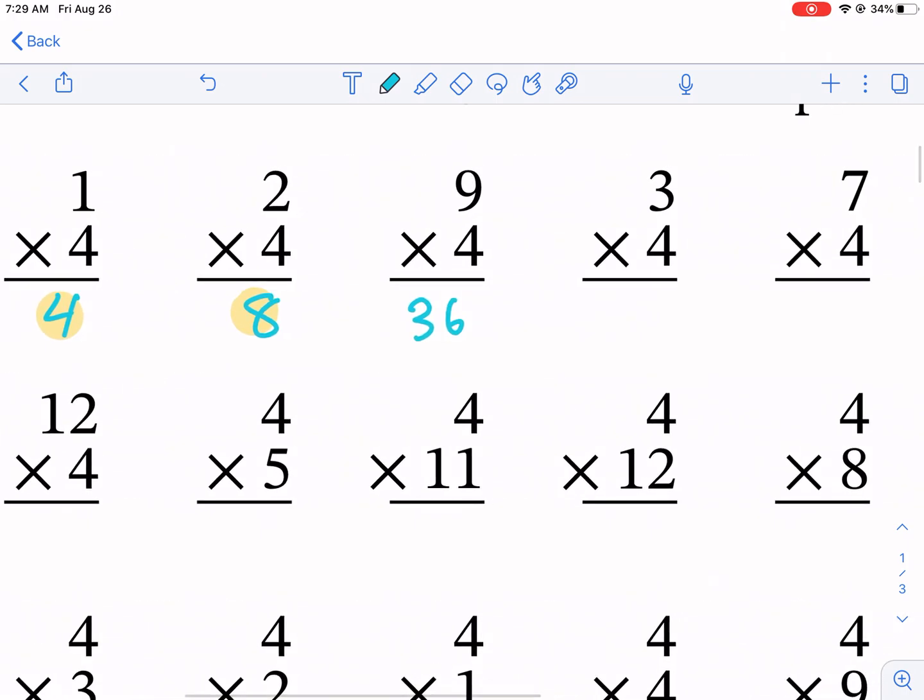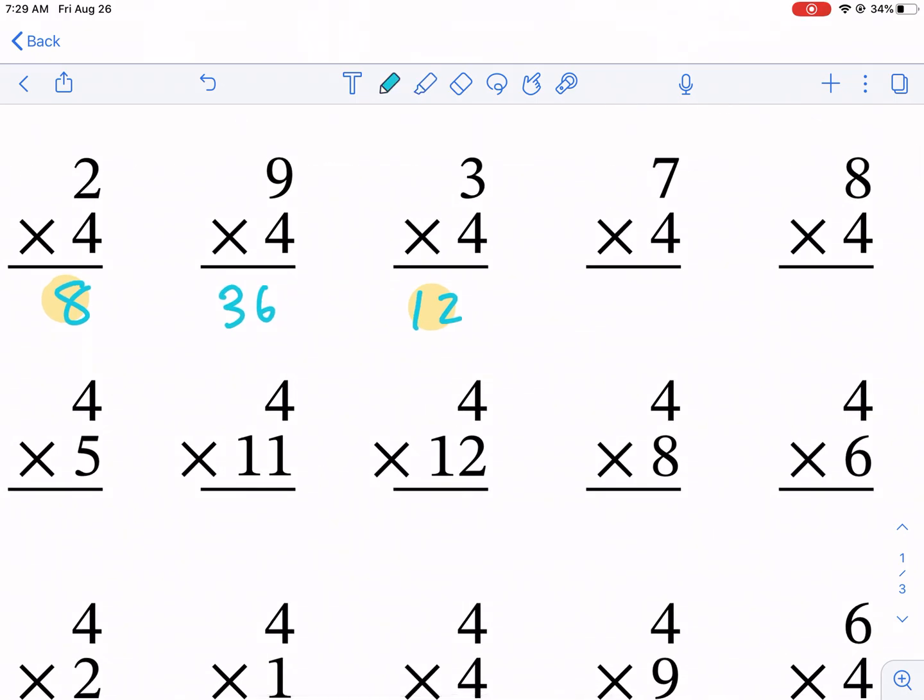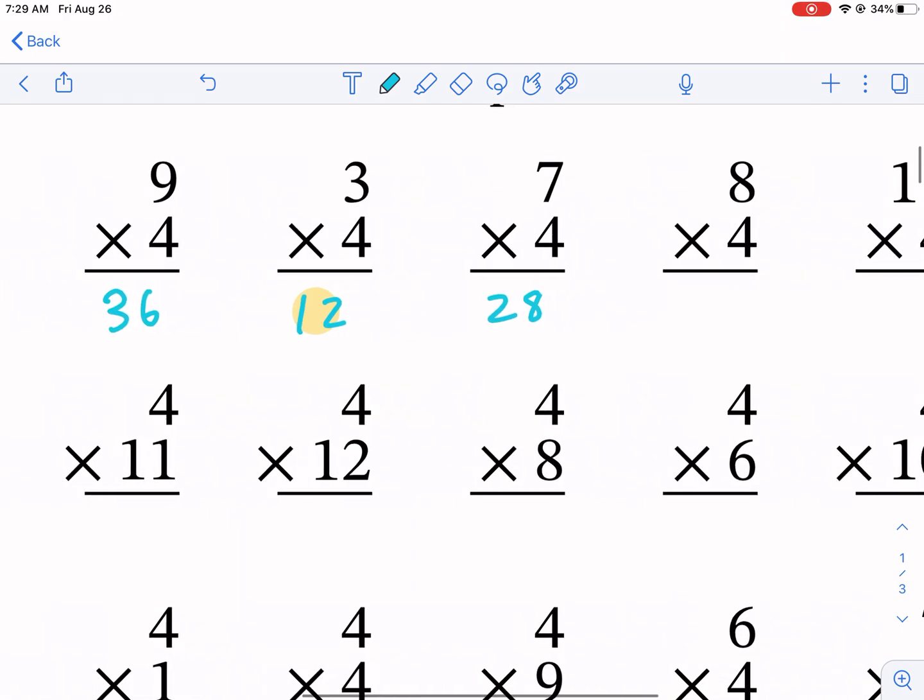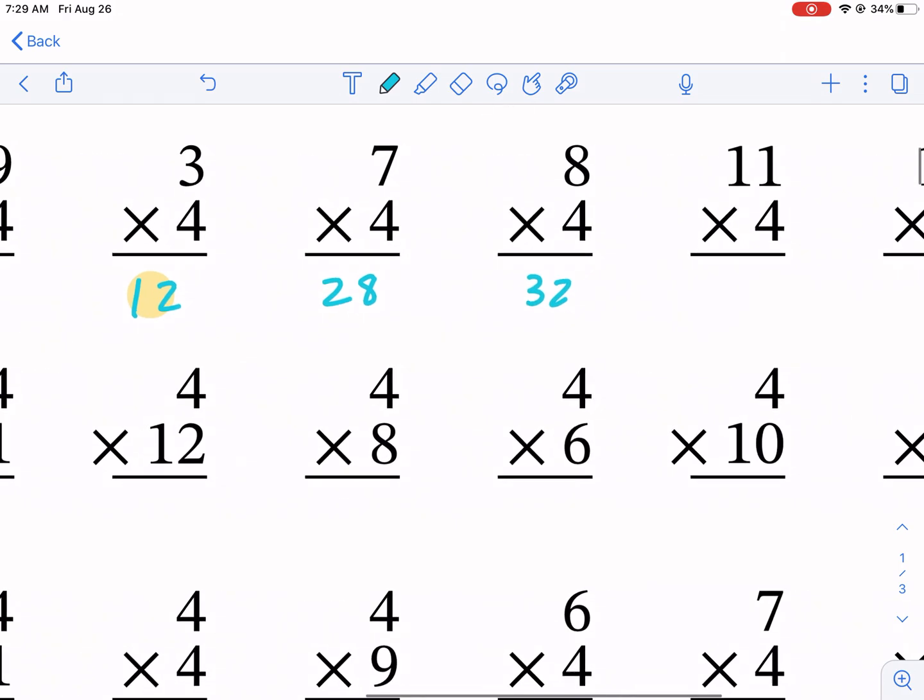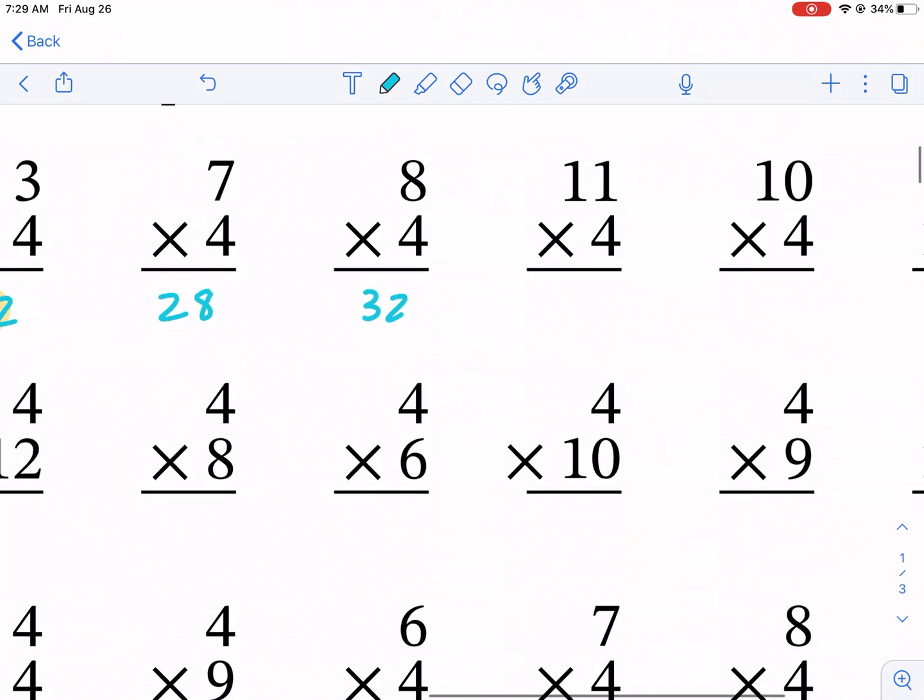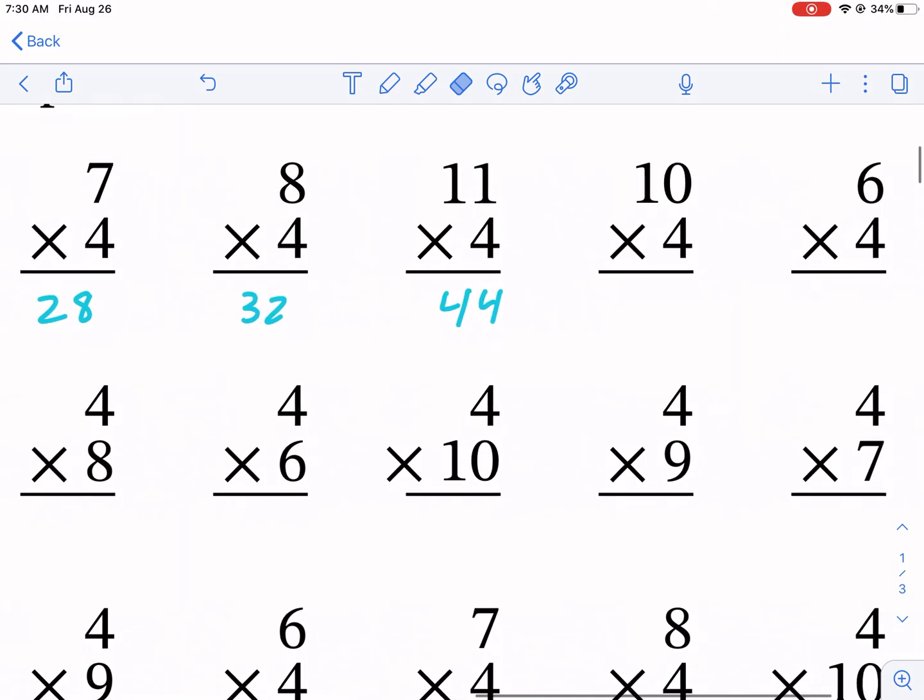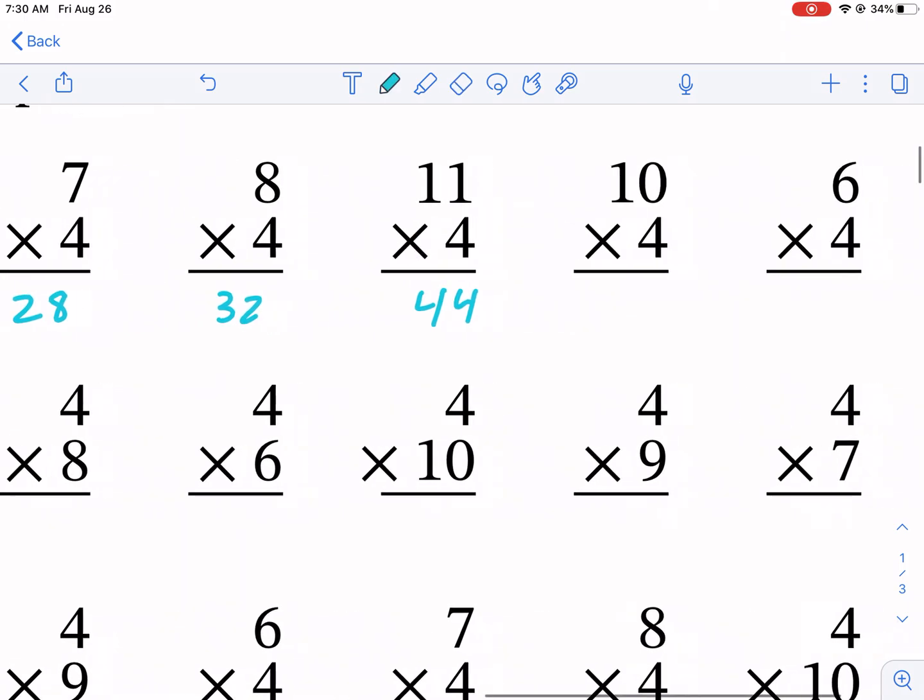So nine times four, 36. That one's a little bit more tricky. Got to know the 12. You're going to be using four times three a lot. Seven times four, 28. Then we have 32. That one's maybe a little bit tricky. 11 times four. So anytime you multiply by 11, we can use our standard algorithm here. That means we do four times one first, and that's four. And then we go over to the next column four times one, and that's four. But anytime you multiply by 11 with a single digit number, you're just going to make it that number two times, four and four right next to each other, 44.